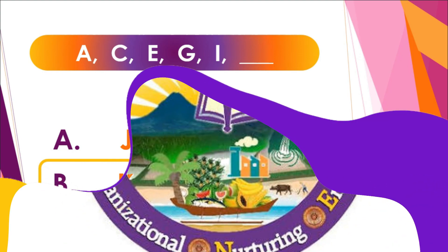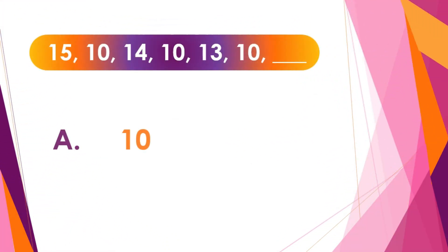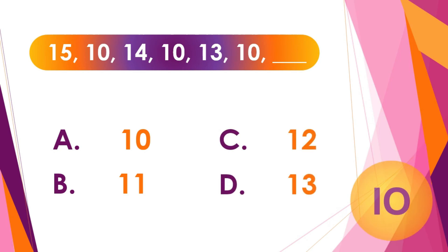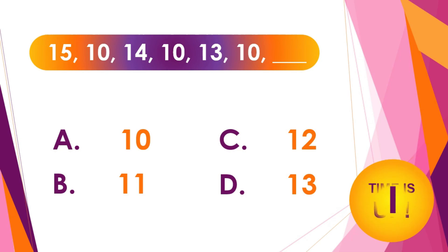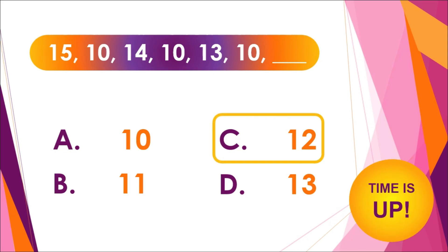Very good! For number two, the answer is letter C — twelve. Why twelve? Because, as you have noticed, the terms in the first, third, and fifth positions are diminished by one, while ten is constantly appearing alternately.